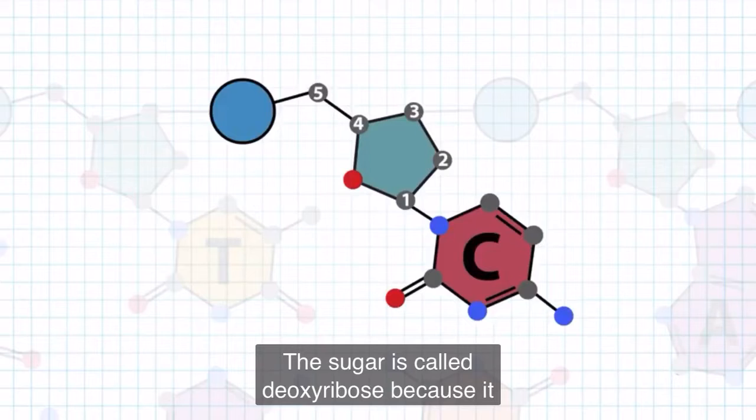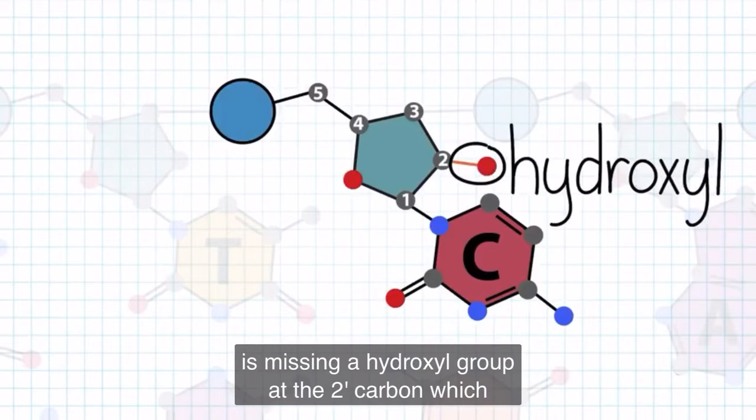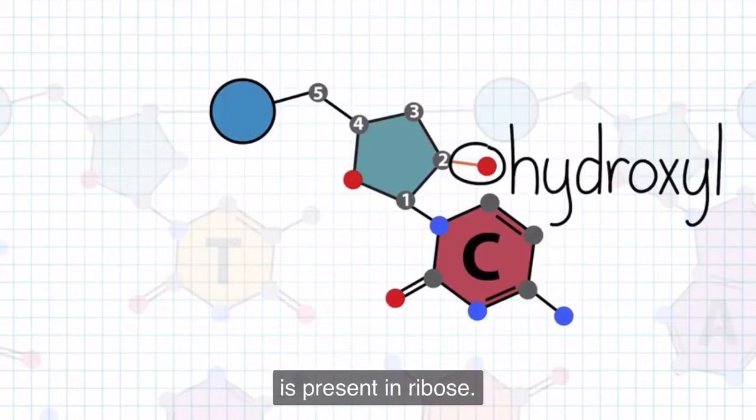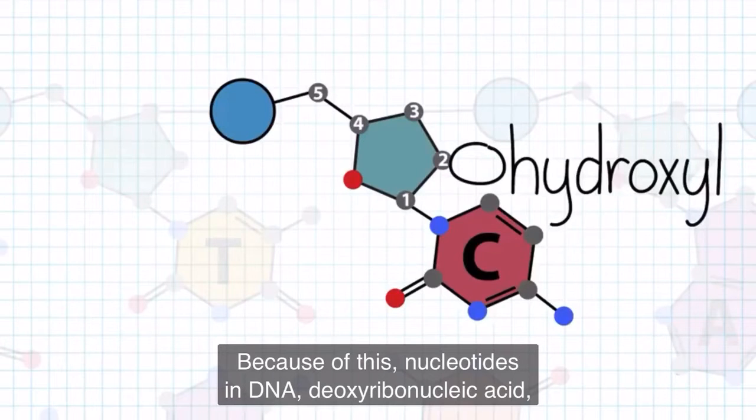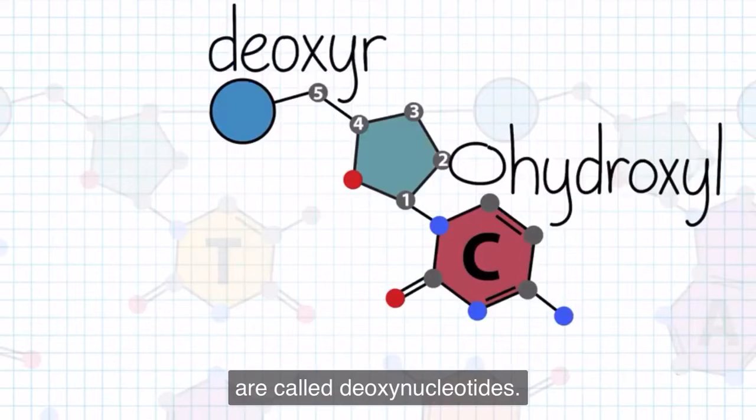The sugar is called deoxyribose because it is missing a hydroxyl group at the 2' carbon, which is present in ribose. Because of this, nucleotides in DNA, deoxyribonucleic acid, are called deoxynucleotides.